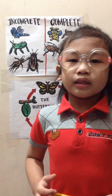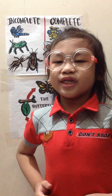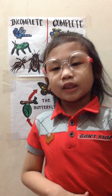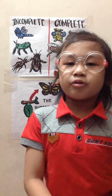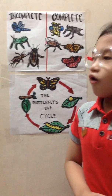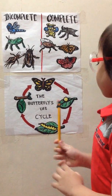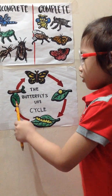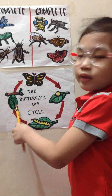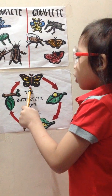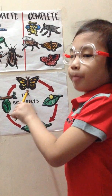Let us now proceed to the four stages of the biological process of a butterfly. First, egg. Second, larva. Third, pupa or chrysalis. Fourth, adult butterfly.